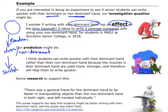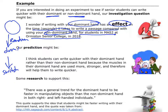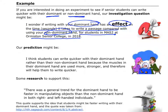So I've got the 'effect,' I've got my dominant hand compared to my non-dominant hand as my two groups, and I've specified the participants: students in MES2 at OSC in 2018. That gives me my investigation question: I wonder if writing with my dominant hand has an effect on the time it takes to write a passage. Once I've got that question, I want to look at a prediction and find some research about why this might be to back me up.